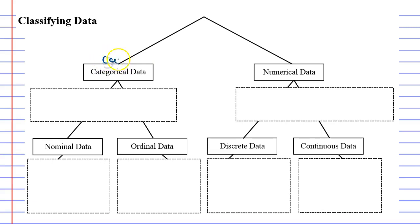Categorical basically means putting in a category and numerical data basically means it's a number. So here are some examples.